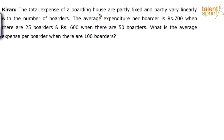The total expenses of a boarding house are partly fixed and partly vary linearly with the number of borders. The average expenditure per border is Rs. 700 when there are 25 borders and Rs. 600 when there are 50 borders. What is the average expense per border when there are 100 borders?